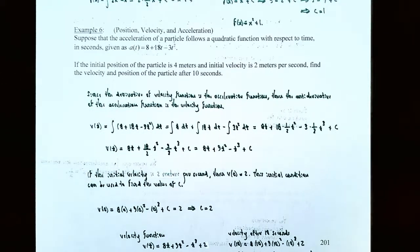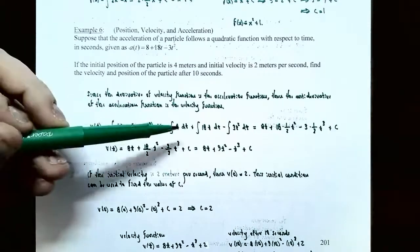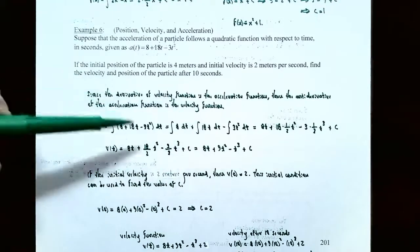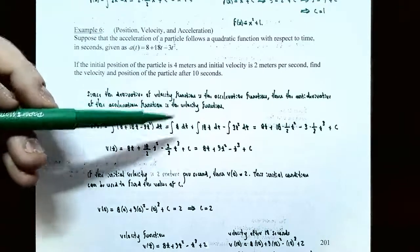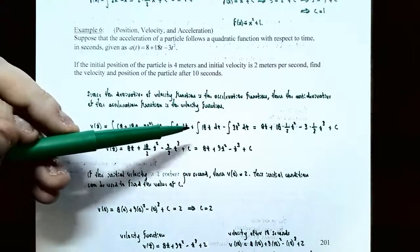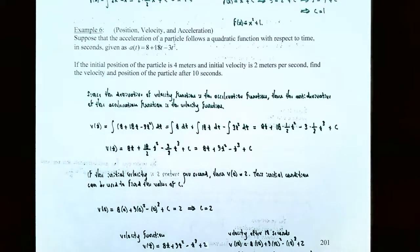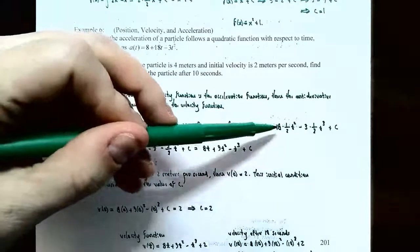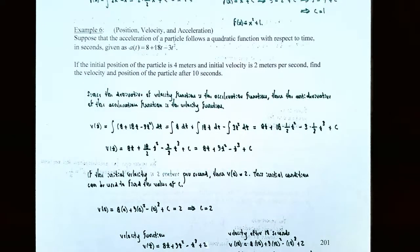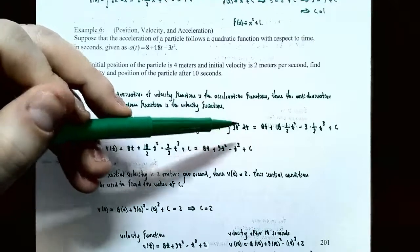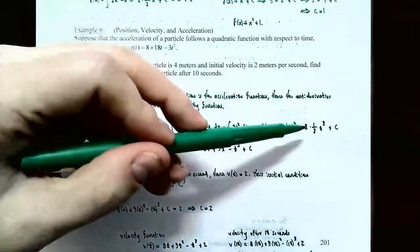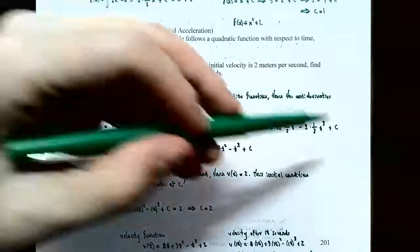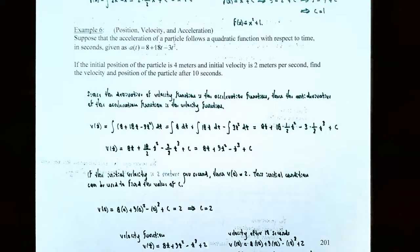We can take the antiderivative of each term separately: the integral of 8 dt, the integral of 18t dt, and the integral of 3t² dt. The antiderivative of 8 is 8t. For 18t, 18 is the coefficient so you keep it, and t is a power function, so you add 1 to the exponent and divide by the new exponent, giving 18 times one-half t squared. For the last term, 3 is the coefficient and t squared is a power function, so you get 3 times one-third t cubed. Don't forget plus C at the end.